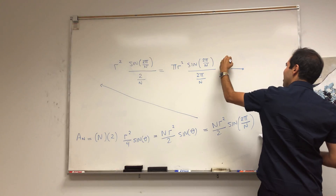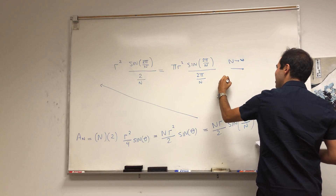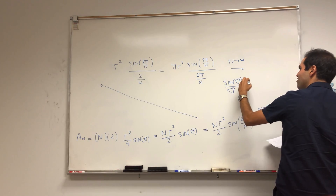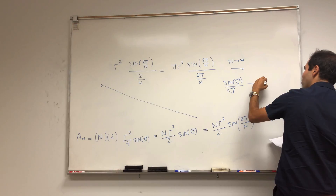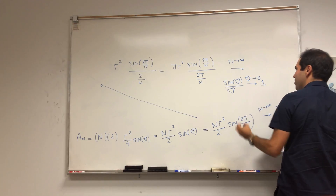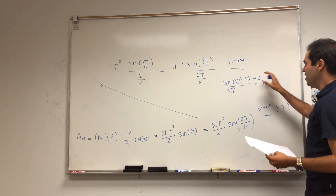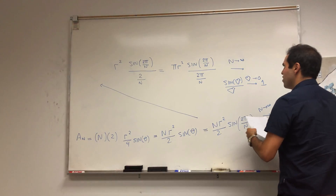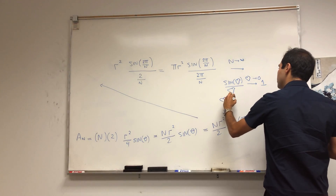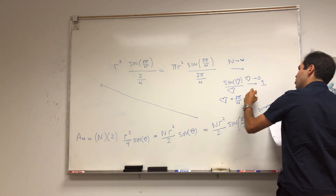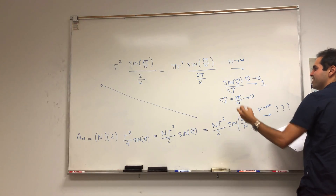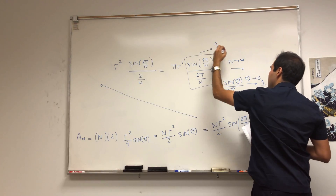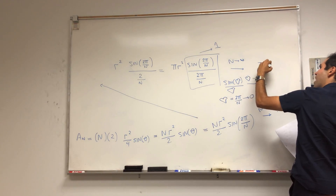Now we let n go to infinity. There's a really nice rule that says sin(junk)/junk goes to 1 as junk goes to zero — I've done a video on that, it's a cool proof. We apply this with the junk equal to 2π/n, which does go to zero as n goes to infinity. So this whole thing goes to 1, and we're left with simply π·r².